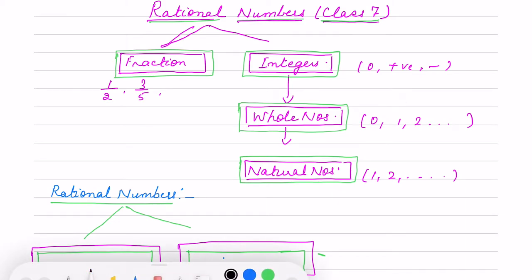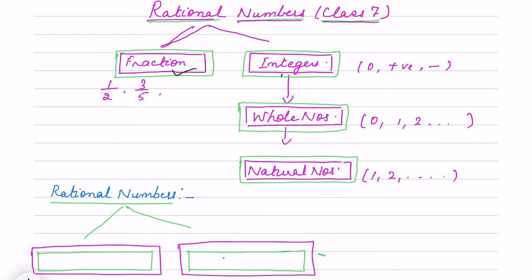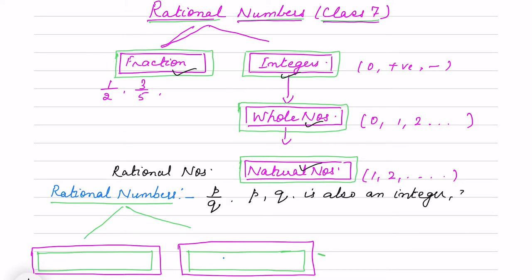Rational numbers include fractions, integers, whole numbers, and natural numbers — all these numbers are called rational numbers. If we define rational numbers, they are in the form of P by Q, where P is an integer, Q is an integer, and Q — that is the denominator — is not equal to 0.